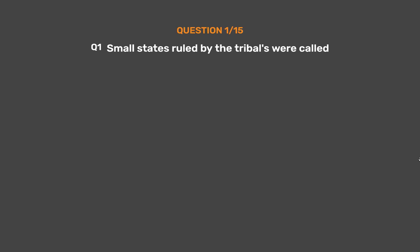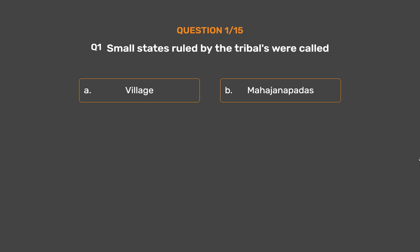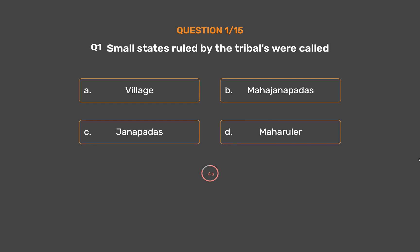Question No. 1. Small states ruled by the tribals were called. Option A: Village. Option B: Mahajanapadas. Option C: Janpadas. Option D: Maharulir. The correct answer is Option C: Janpadas.